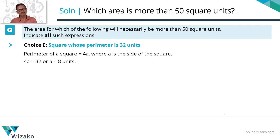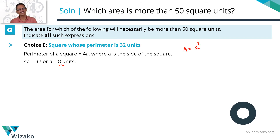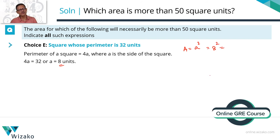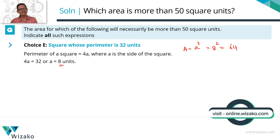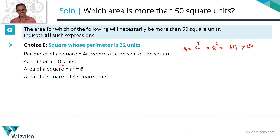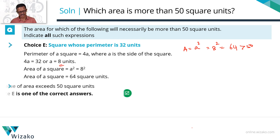Choice E is a square whose perimeter is 32. All four sides are equal, so 4a = 32, giving a = 8. Area of a square is a² = 8² = 64 square units. There is no sinθ or variable — the area is fixed at 64, which is greater than 50. This is the only value possible if the perimeter is 32. So choice E is a case where the area is necessarily greater than 50.